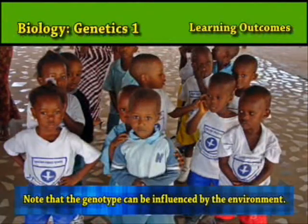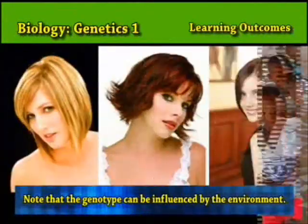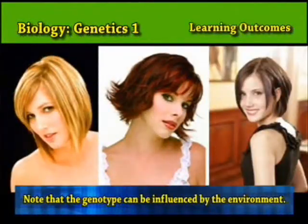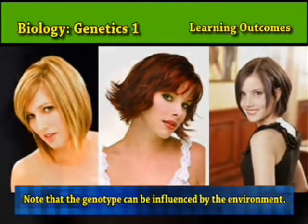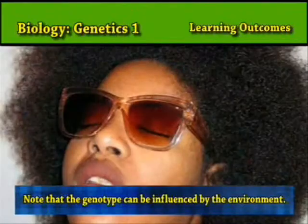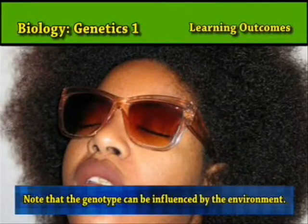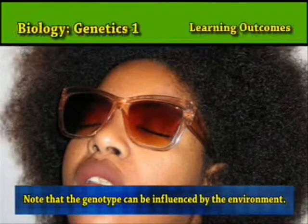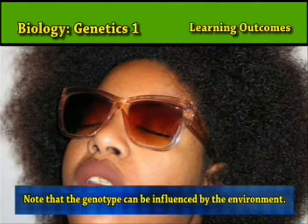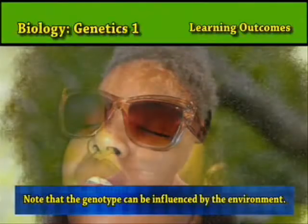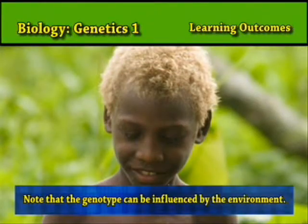For example, hair color. Some with naturally black hair, with undue exposure to the UV rays of the sun, can develop brownish-red hair.